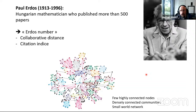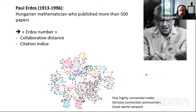They make the parallel with Broadway musical artists and look at the small-worldliness index — the W index. This study looked at artists in Broadway and the outputs — how they decided if the network was working or not was by looking at shows, whether they got a lot of entries and so forth.